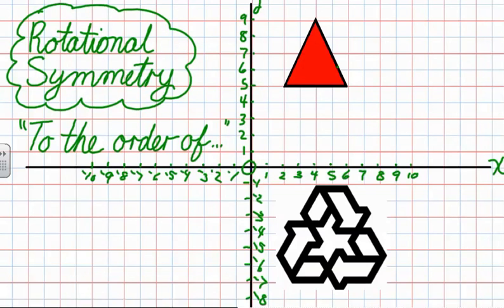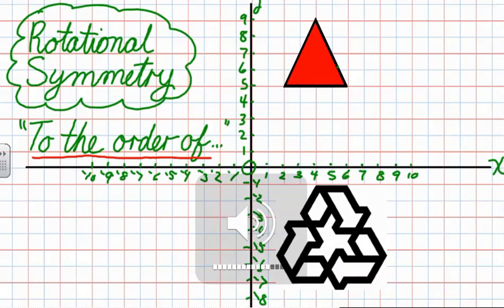In talking about rotational symmetry, the main phrase that you need to know is 'to the order of.' When we're talking about rotational symmetry, we're talking about how we spin an object about its center so that it looks exactly the same.